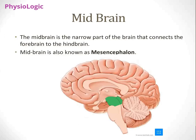After the forebrain, coming down, is your midbrain — the structure that lies between the forebrain and the hindbrain. It is the narrow part of the brain that connects the forebrain to the hindbrain. The other name for midbrain is mesencephalon. It is shaded green in the image so you can visualize it clearly. This is a sagittal section viewed from the side. The top is forebrain, the greenish area is midbrain, and beneath the green area is hindbrain.